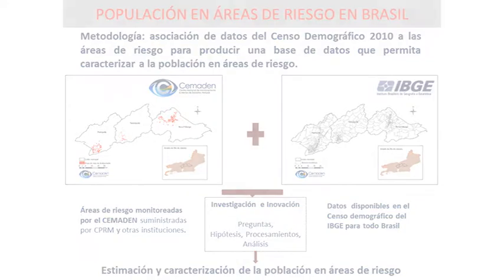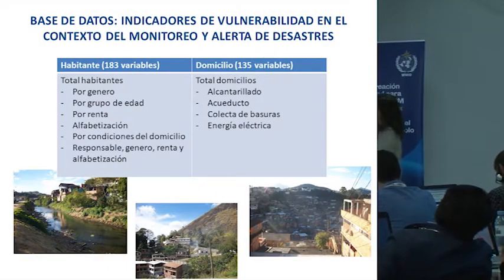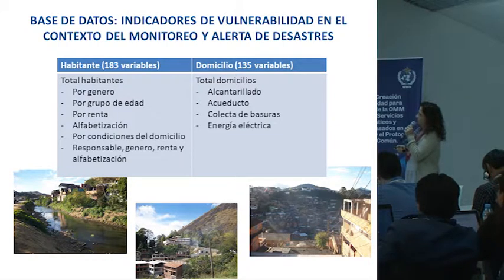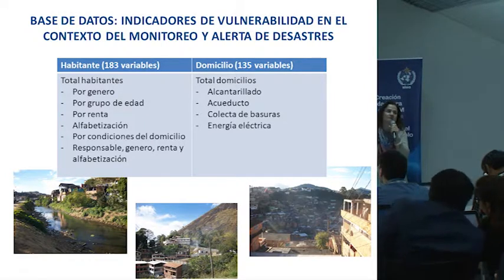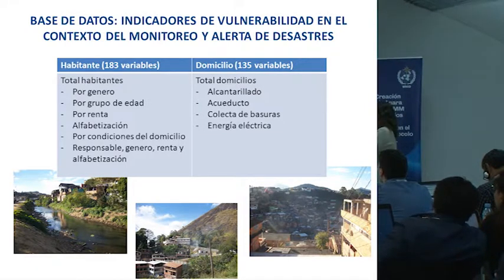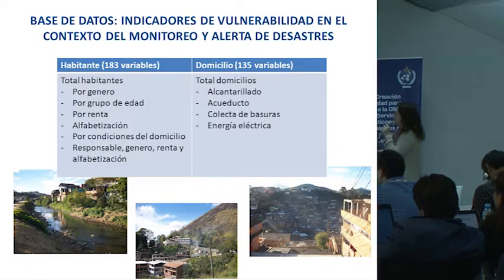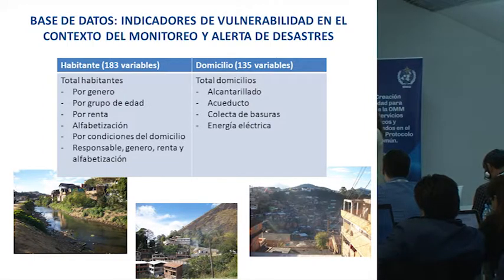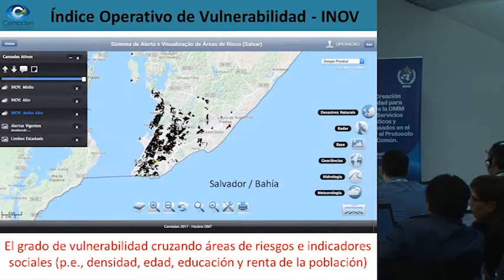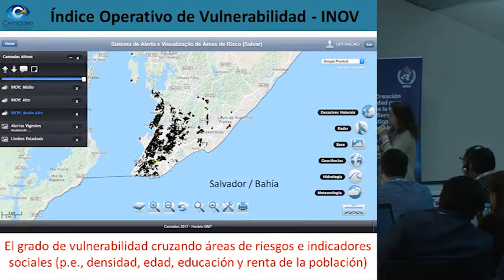The institute called IBGE is the one that has more data and shares with us. They have a database of vulnerability indicators for this context. By evaluating the people, we considered 193 variables recorded regarding people: gender, age, literacy, conditions of the housing, 135 variables for the houses — whether they have garbage collecting system, sewage system, power. All this information is taken under consideration by this institution.